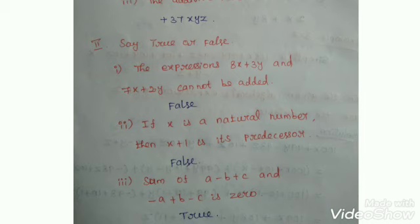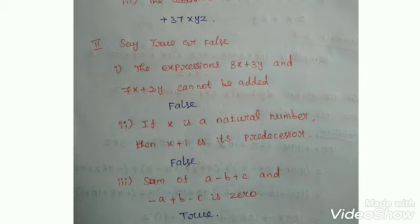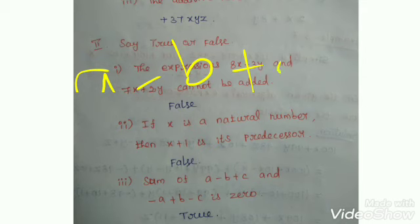Second true/false: if X is a natural number, then X plus 1 is its predecessor. Predecessor means minus 1, so X minus 1 is the predecessor — not X plus 1. That is false. Third: sum of (a minus b plus c) and (minus a plus b minus c) is 0. Terms cancel: plus c minus c, minus b plus b, a minus a — all cancel, giving 0. That is true.